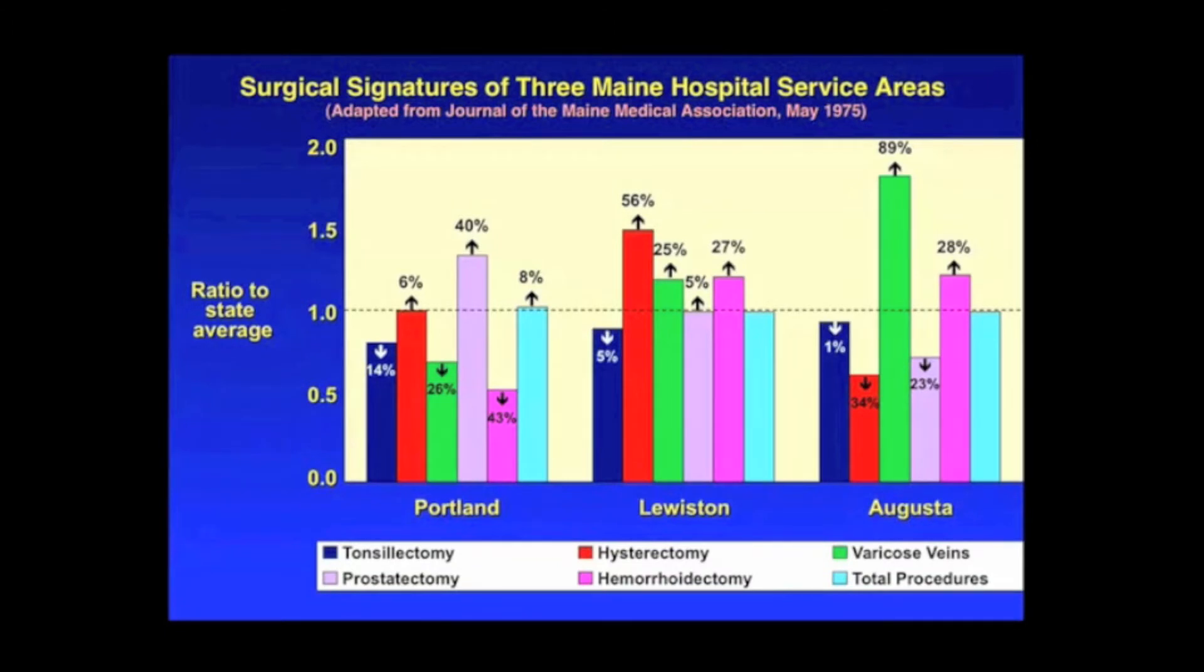Well, this is one of my favorite graphs. It basically dawned on us as we looked at these rates that what was a high rate in one area was a low rate in another area, and there was just no consistency. So even though the overall rate of surgery was the same between these communities, how they used surgery varied to an extraordinary degree. Take an example of Portland, where in the purple we see the prostatectomy rates, which were 40% higher than the state average.